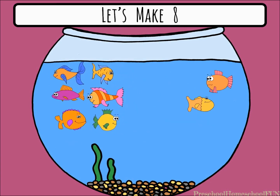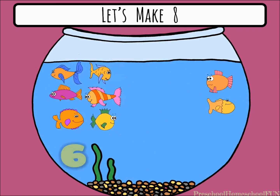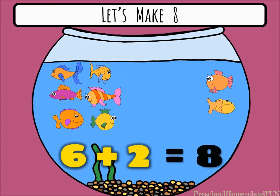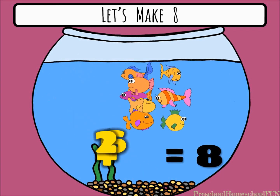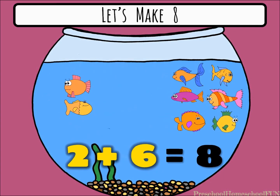Now if two fish swim to the side, we have six on the left and two on the right. Six plus two equals eight. If our fish switch places, we have two plus six equals eight.